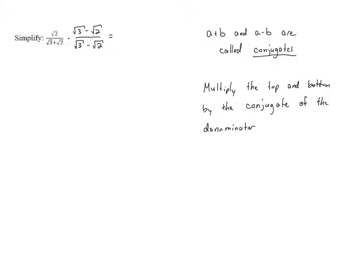In the numerator, when we multiply the square root of 2 times root 3 minus root 2, we distribute that root 2 to both terms. Root 2 times root 3 gives us root 6, then minus root 2 times root 2, which is root 4 — but the square root of 4 is just 2. So we have root 6 minus 2 in the numerator.